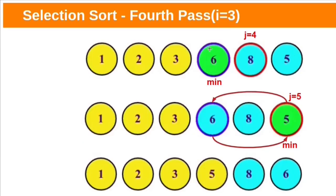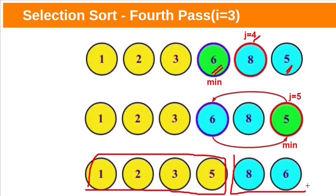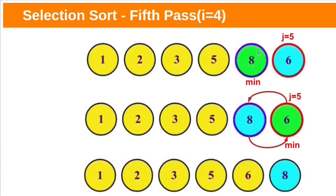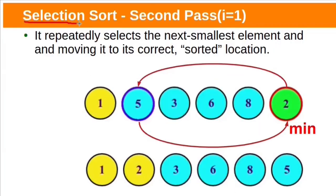Again the first element in the unsorted sublist — the element at index 3 — is assumed as the minimum. Start at index 4 to find the next smallest, which is 5. Swap minimum element 5 with the first element in the unsorted sublist. After the fourth pass, again the first element in the unsorted sublist is assumed as minimum. Starting at index 5, we find the next smallest is 6. Swap the first element in the unsorted subarray with the minimum element 6. After the fifth pass, all elements are in sorted order. Selection sort gets its name because it repeatedly selects the next smallest element and moves it to its correct position.